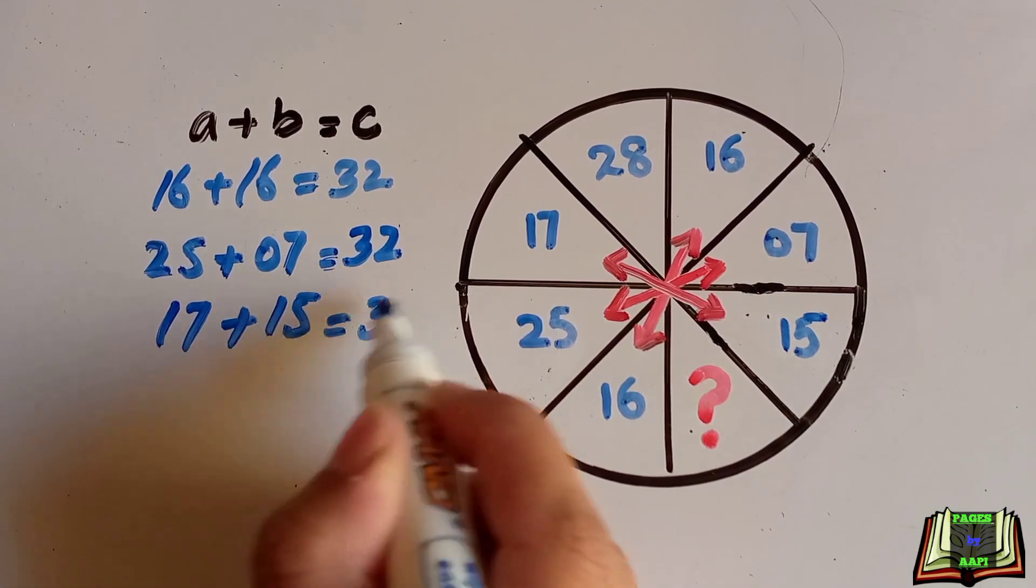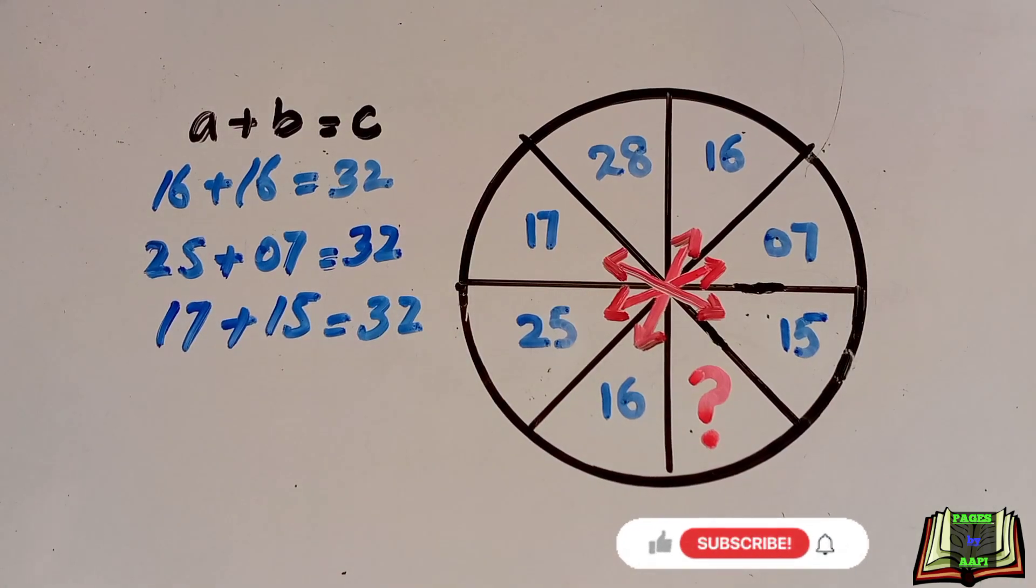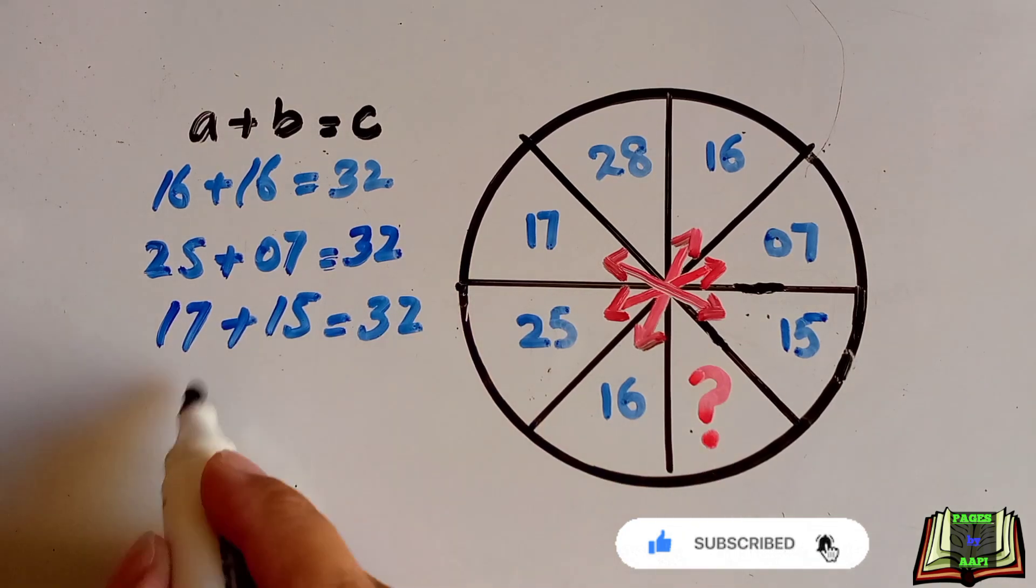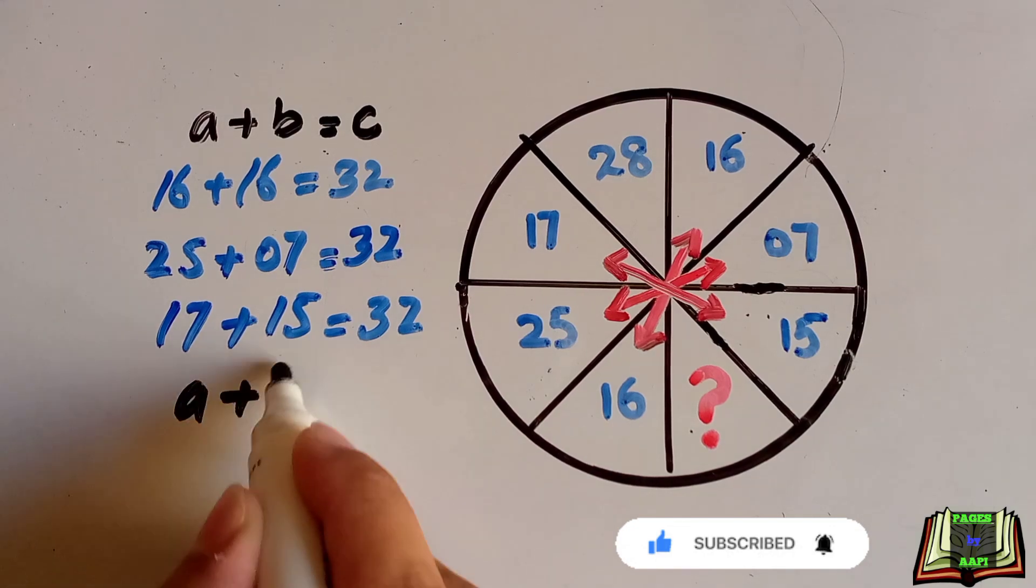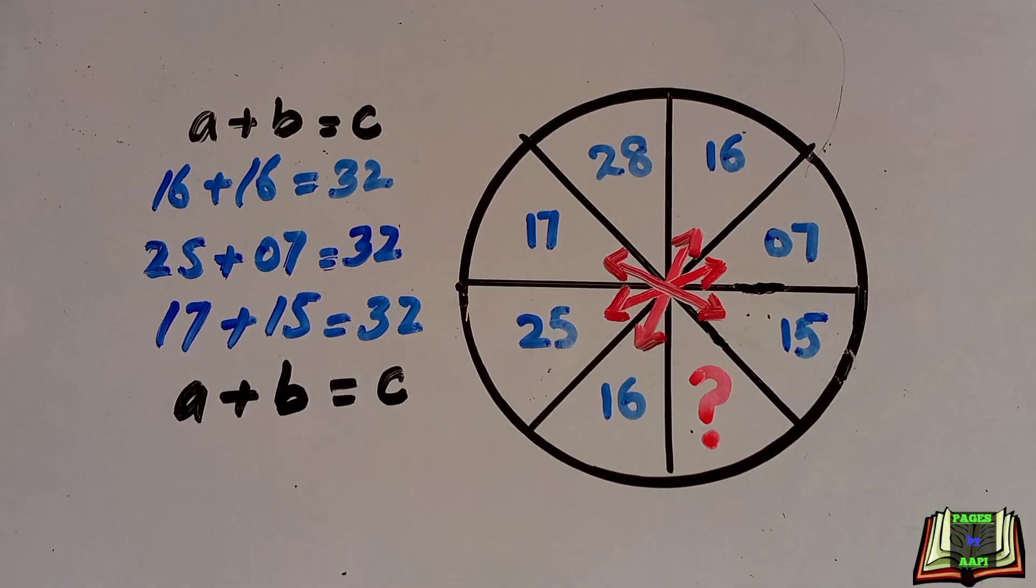Now in the same way we will find the unknown number. Here a is given, b we have to find out. We will use the same formula a plus b is equal to c.